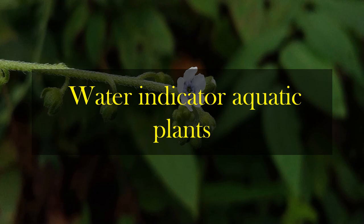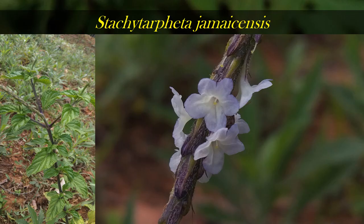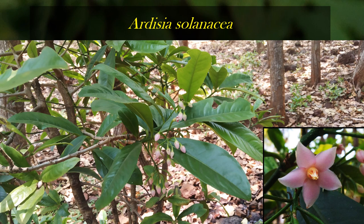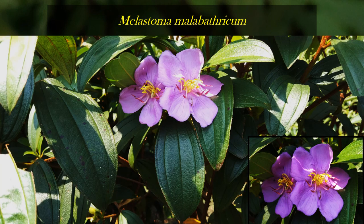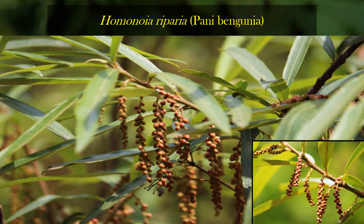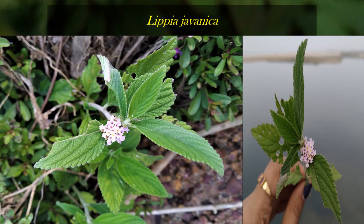Now, water indicator aquatic plants — these are plants which indicate the presence of water. Stactophyta geminensis indicates water. Odisea solanaceae also indicates water. Canthium dicocum is a tree species that indicates the availability of water. Melastoma malbathericum is a shrub species that also indicates wetland and water. Homonia riparia is very important for our streams — without it, there is no meaning to our stream. Lipia javanica again indicates water.